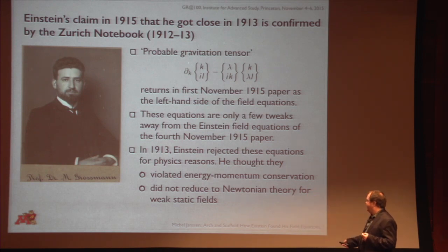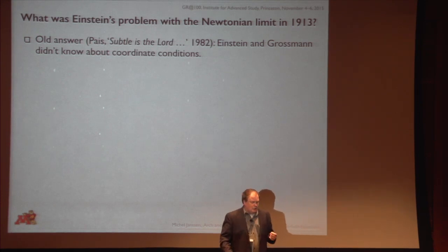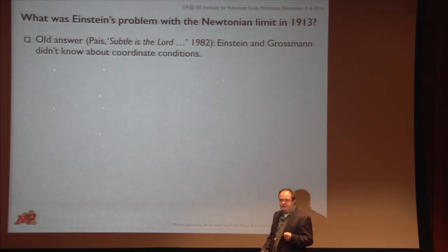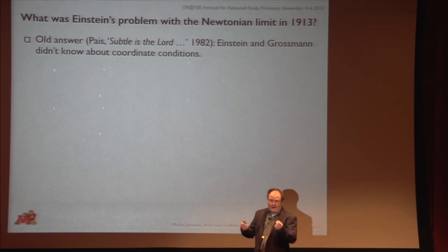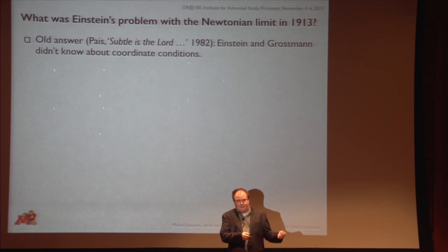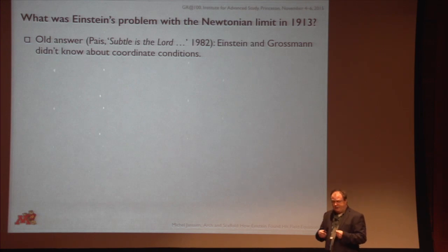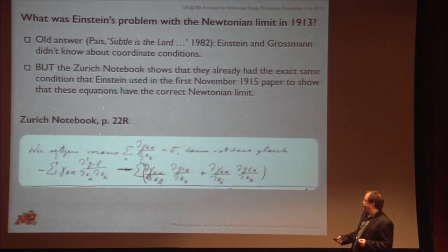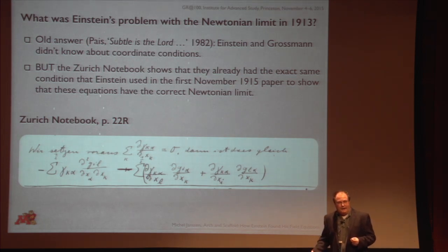I want to look a little bit more at this problem of the Newtonian limit. The standard account — which you can find in Pais's Subtle is the Lord — is simply that Einstein and Grossmann did not know about the modern concept of coordinate conditions. The story there is that if you're going to compare generally covariant equations to Newtonian equations, you're going to have to restrict the covariance of the former, because the Poisson equation is not generally covariant. You do that by imposing four conditions on the metric, which are just gauge conditions. Unfortunately, that very same page I showed you also shows that Einstein knows full well what the condition is he needs in order to get those equations down to something like the Poisson equation. He writes down the condition that the divergence of the contravariant metric vanishes, and you then find that the only term to worry about in first-order approximation is a term that looks like the Laplacian acting on the metric — the other terms are quadratic in first derivatives and can be neglected.